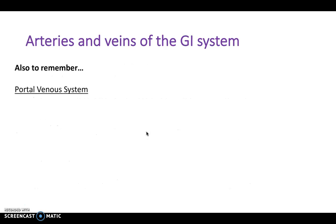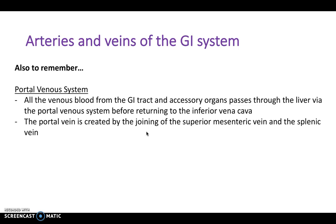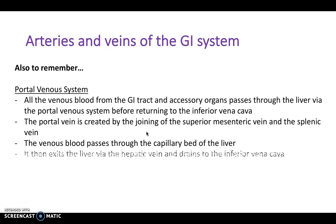The portal venous system is important for venous drainage of the GI system. All venous blood from the GI tract and accessory organs passes through the liver via the portal venous system before returning to the inferior vena cava. The portal vein is created by the joining of the superior mesenteric vein and the splenic vein. Venous blood passes through the capillary bed of the liver, exits via the hepatic vein, and drains into the inferior vena cava.